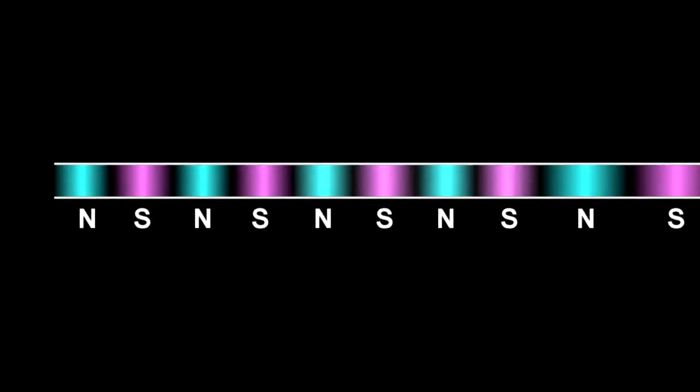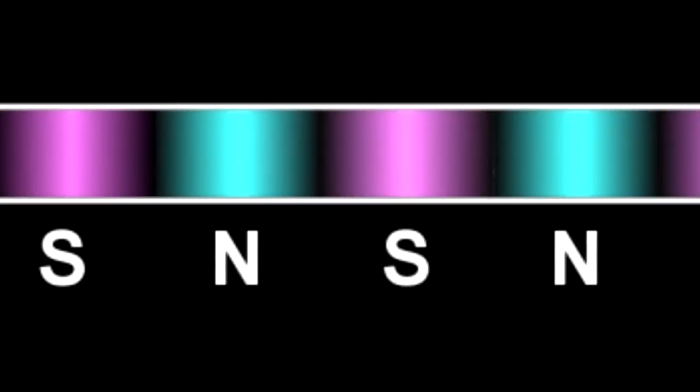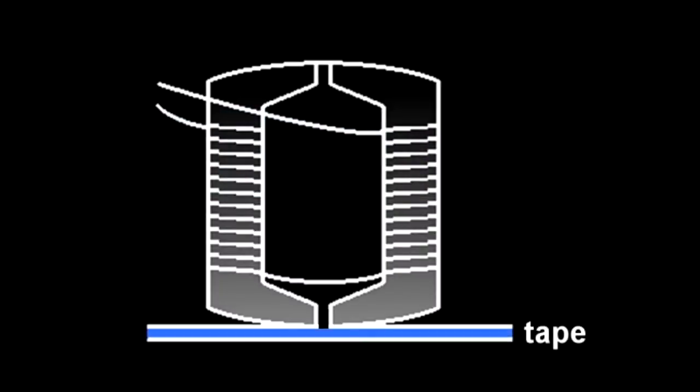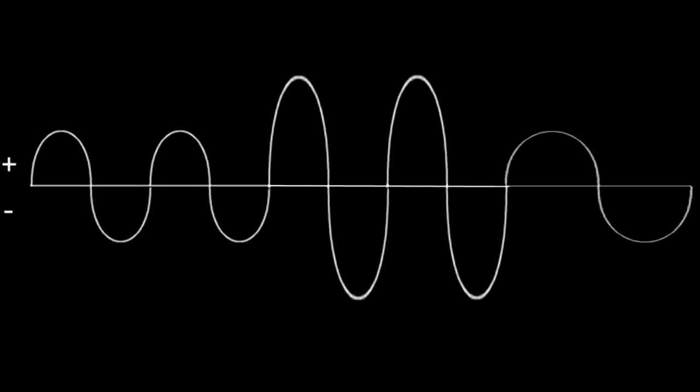To play this signal back, we rewind the tape and pull it back across the head. The magnetic impulses on the tape will induce a small electrical signal in the head, which can be amplified, and the sound can be reproduced through a speaker.